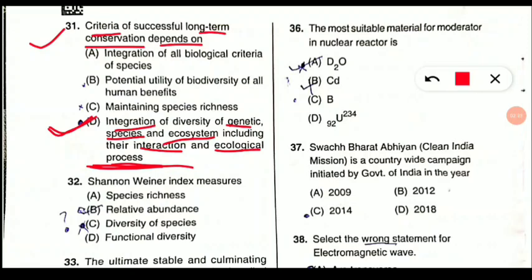Question 32: Shannon-Wiener index measures what? This is very important and related to ecology and ecosystem. Option C is correct — the Shannon-Wiener index measures species diversity, which includes both species richness and species evenness. Note down: species diversity = species richness + species evenness. It is also called Shannon's index.